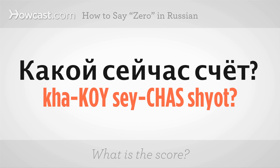If you just started watching a game and you wanted to know the score, you might perhaps ask: what is the score? Which would be: какой сейчас счёт? The accent on the first word is on the second syllable; the accent on the second word is on the second syllable as well. Putting it all together: какой сейчас счёт? And now at a slightly more conversational pace: какой сейчас счёт?